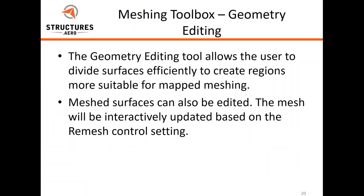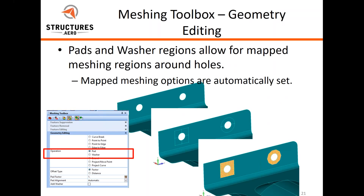Geometry editing allows you to change actual features, whether it be a hole size or the actual size of a part. The geometry editing tool lets us divide up surfaces to create regions for mapped meshing, so we can think in terms of creating rectangular surfaces or well-shaped triangular surfaces. This is interactive, so if you have a meshed surface and make a division using the geometry editing tool, it will interactively update your mesh based on your remesh control settings.